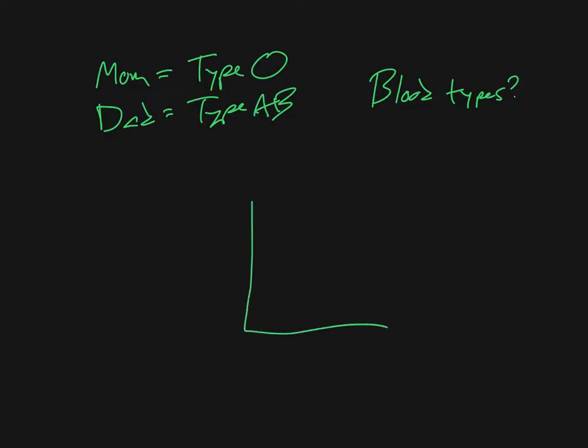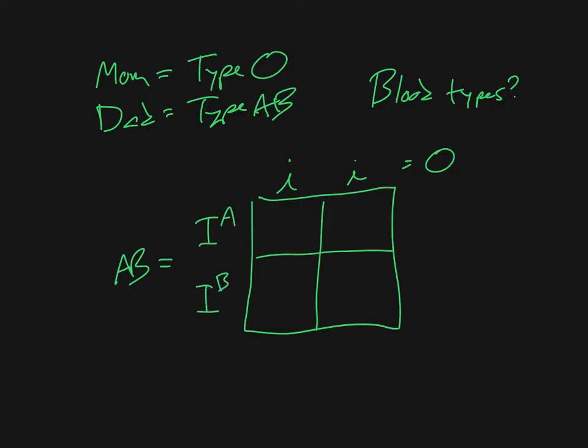So we would set up a Punnett square just like we always have. But now we need to use the appropriate blood type genotypes. So we'll put mom here at the top. Type O blood, right? It'll be written that way. And if dad is AB, we would give him an A allele and a B allele. Then we cross and drop just like we have typed in. So I'm going to bring my A across here. I'll bring my B across here. I'm going to bring this O allele down and this other O allele down.